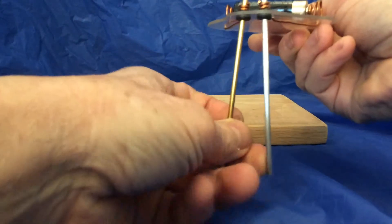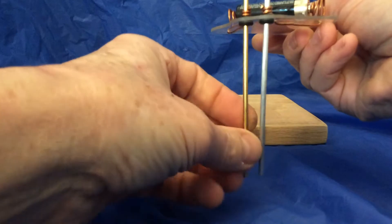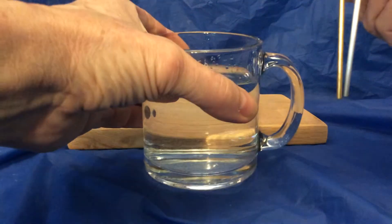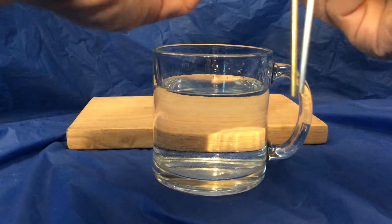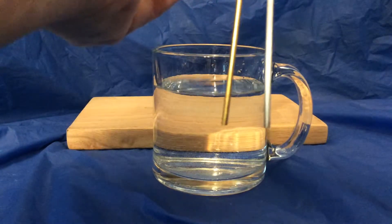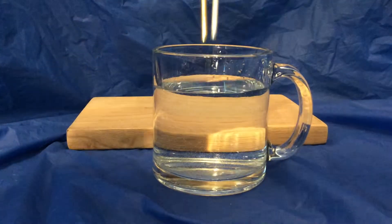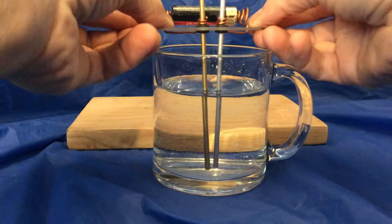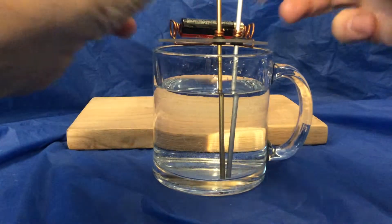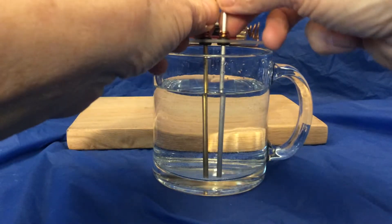Now you get to sort of play with these, spread them apart. Here comes a glass of water, just basic water. And you set the electrolyzer on top. It sits on the top of the cup. Make sure they're not touching. That's the important part.